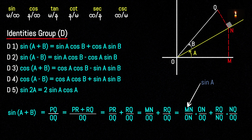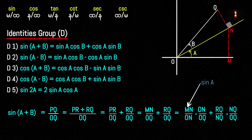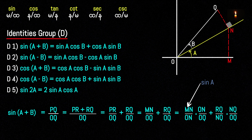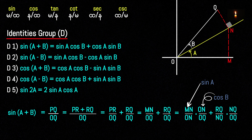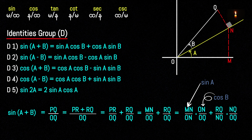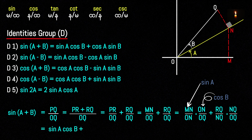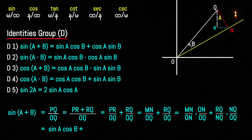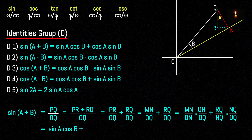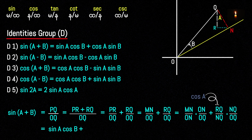We have ON by OQ, so we have ONQ to get here. ON is the OQ and the OQ is ON. So ON by OQ — we can write the ONQ plus ONQ.